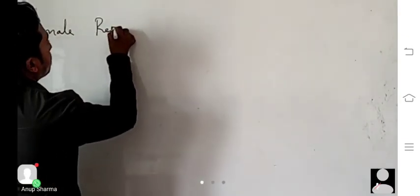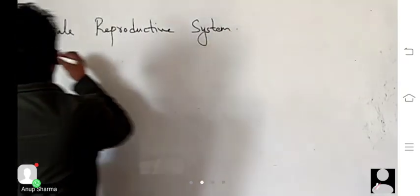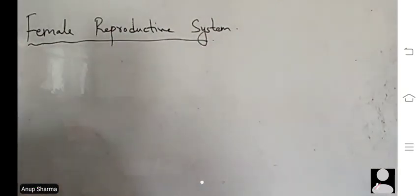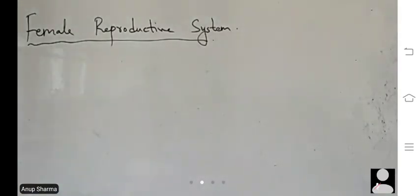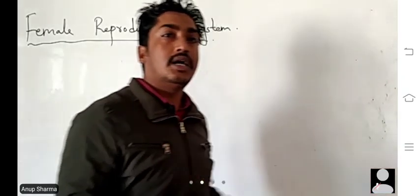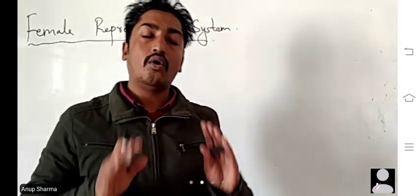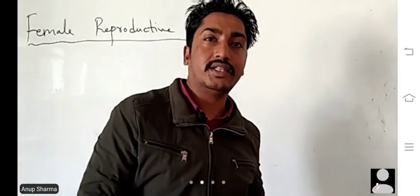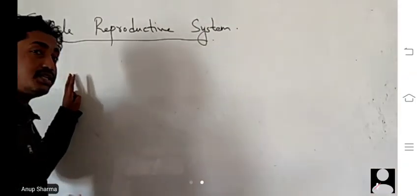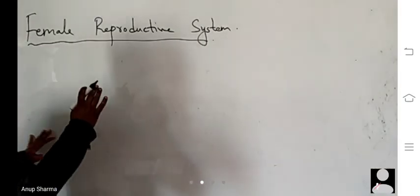We are going to talk about the female reproductive system. As we already discussed, the reproductive system is the only system where male and female reproductive systems are different — that means the organs associated are different. Whereas in other systems like the circulatory system, excretory system, nervous system, and muscular system, all are common irrespective of gender. So today we are going to talk about the female reproductive system.